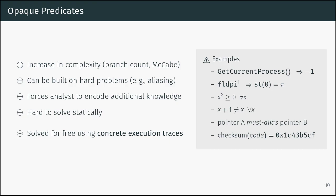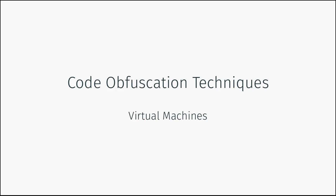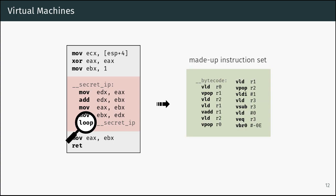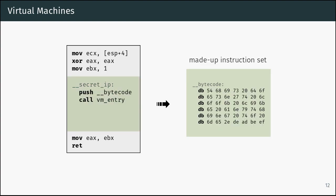Let's look at more complicated obfuscation techniques: virtual machines. Our scenario is we have some code that we want to protect. If we open the binary in IDA Pro or other well-known tools, we can just see what is happening inside. What we can do is replace the code with a made-up instruction set — basically replace this code by pushing some bytecode and calling a virtual machine. Then we just see code of a virtual machine we don't know, so we'd have to first reverse engineer the virtual machine, and afterwards abstract the higher-level semantics of our original code.